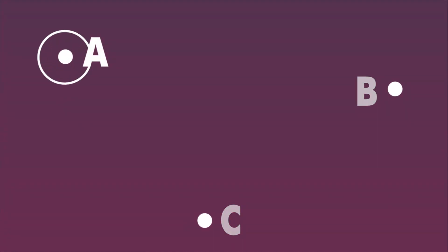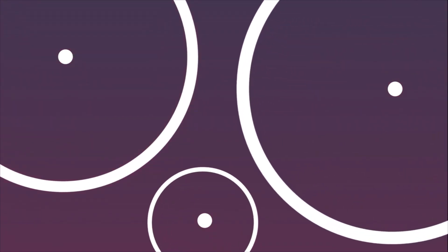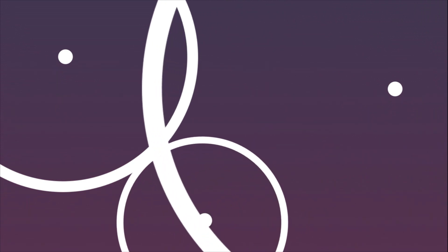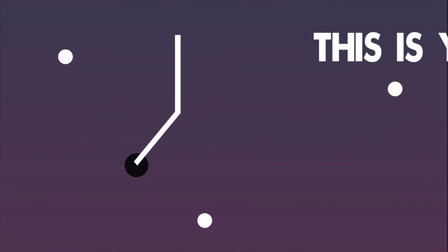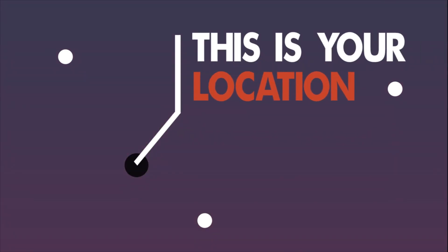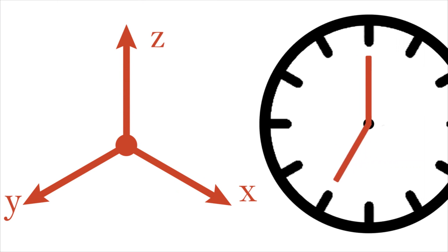Satellite A's distance to the receiver will be measured with the radius of a circle. The same process is done with the other satellites. Finally, we arrive at a common point — this is your location. However, this happens in three dimensions and, of course, with time.